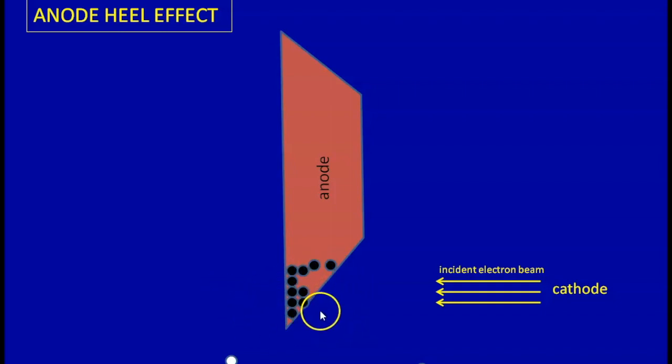As a result of this, there is a variation of intensity across the projected X-ray beam and this is called the anode heel effect.